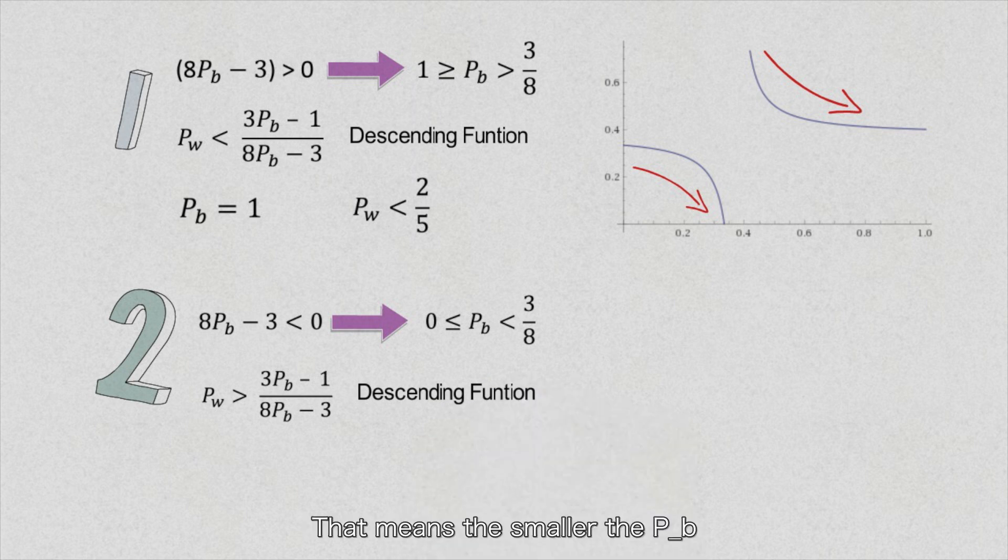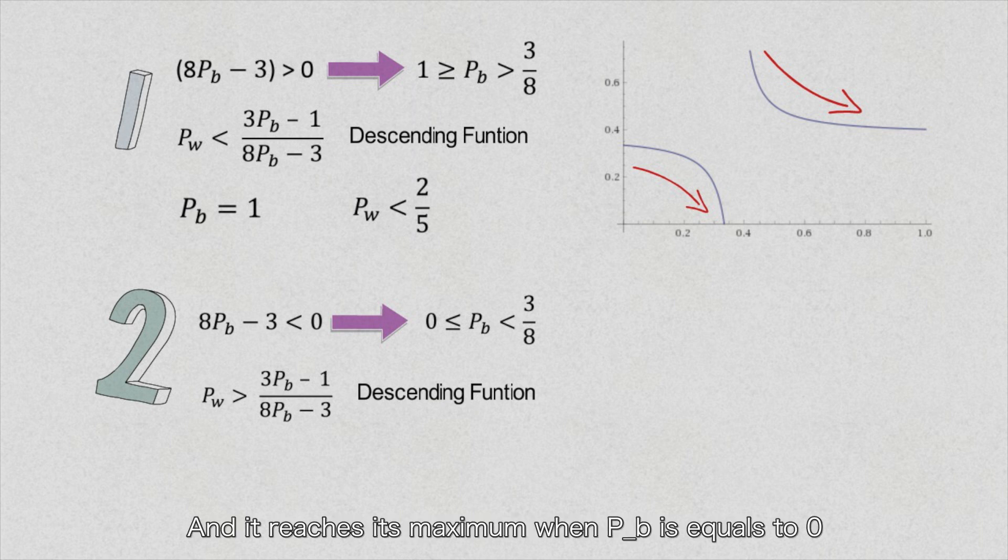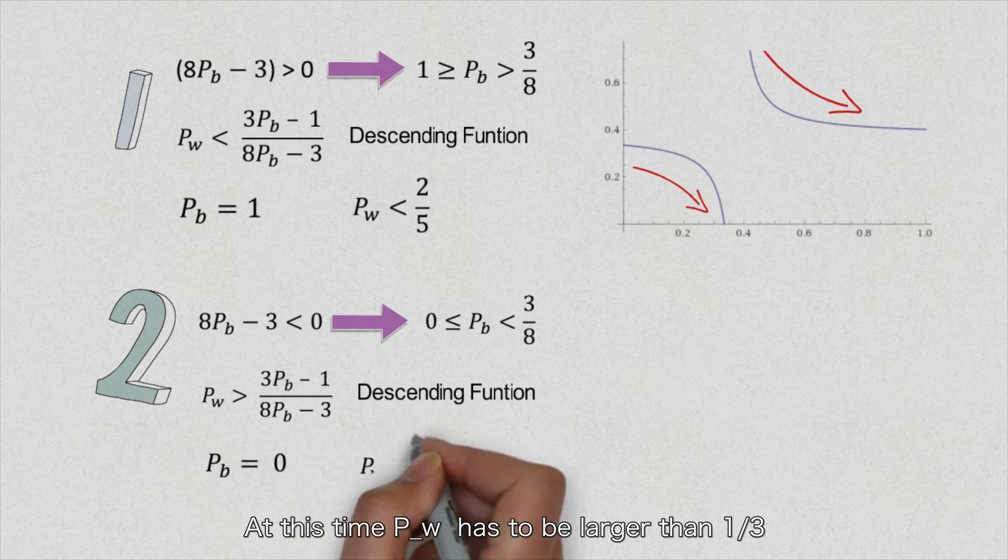That means the smaller the P_b, the bigger its function value, and it reaches its maximum when P_b is equal to 0. At this time, P_w has to be larger than 1 over 3.